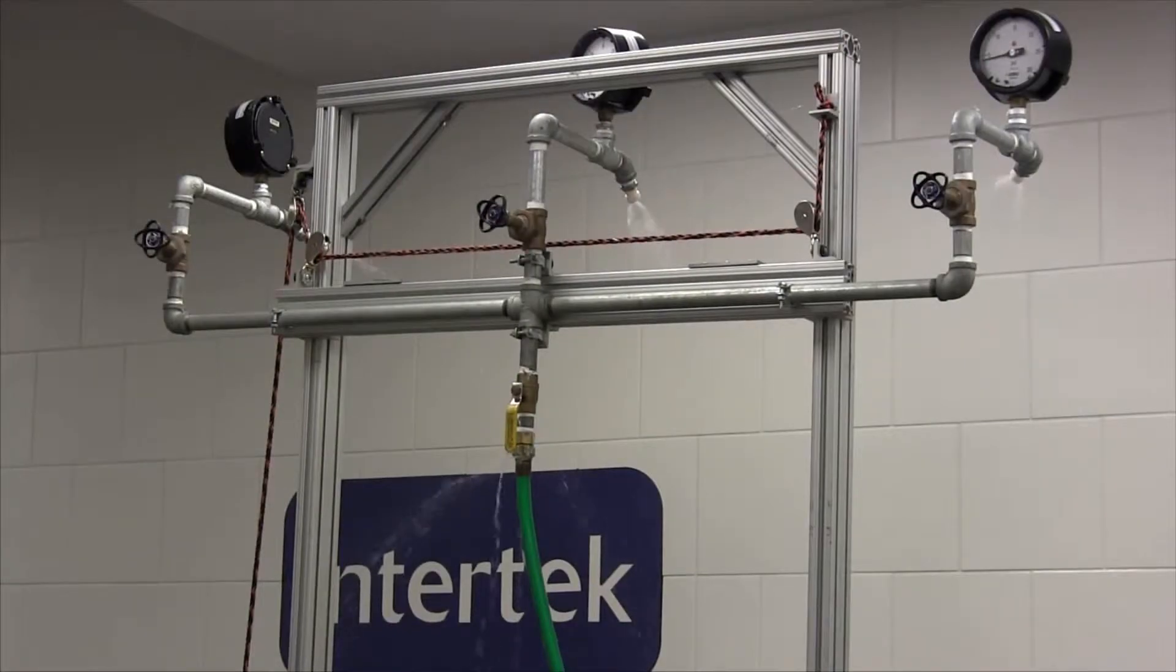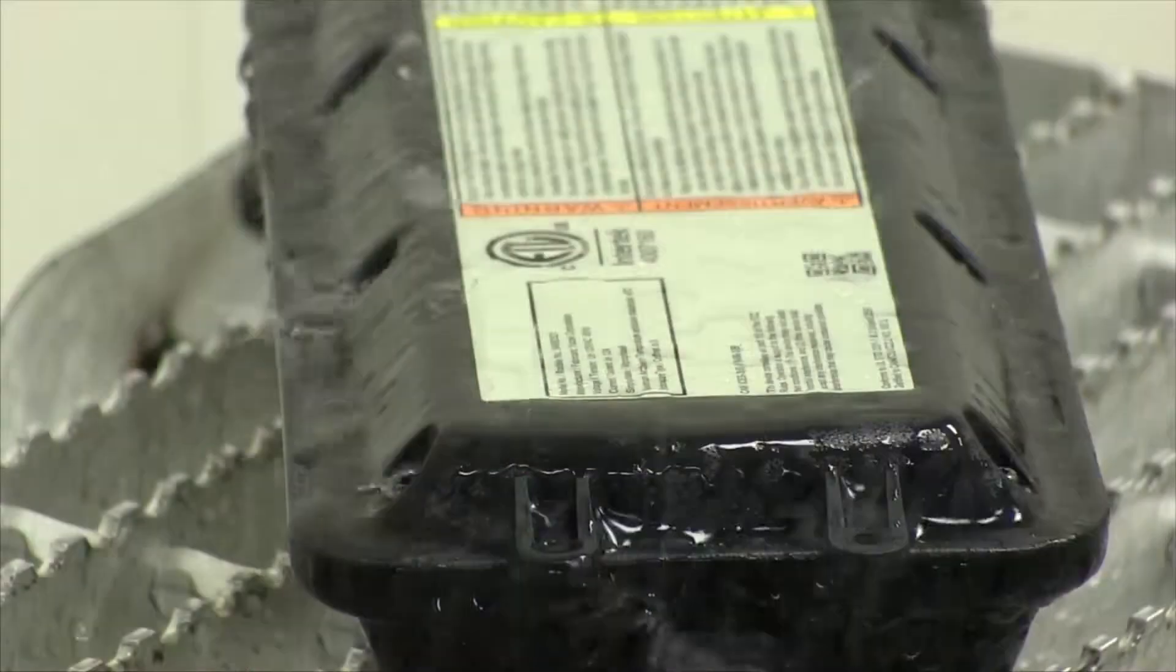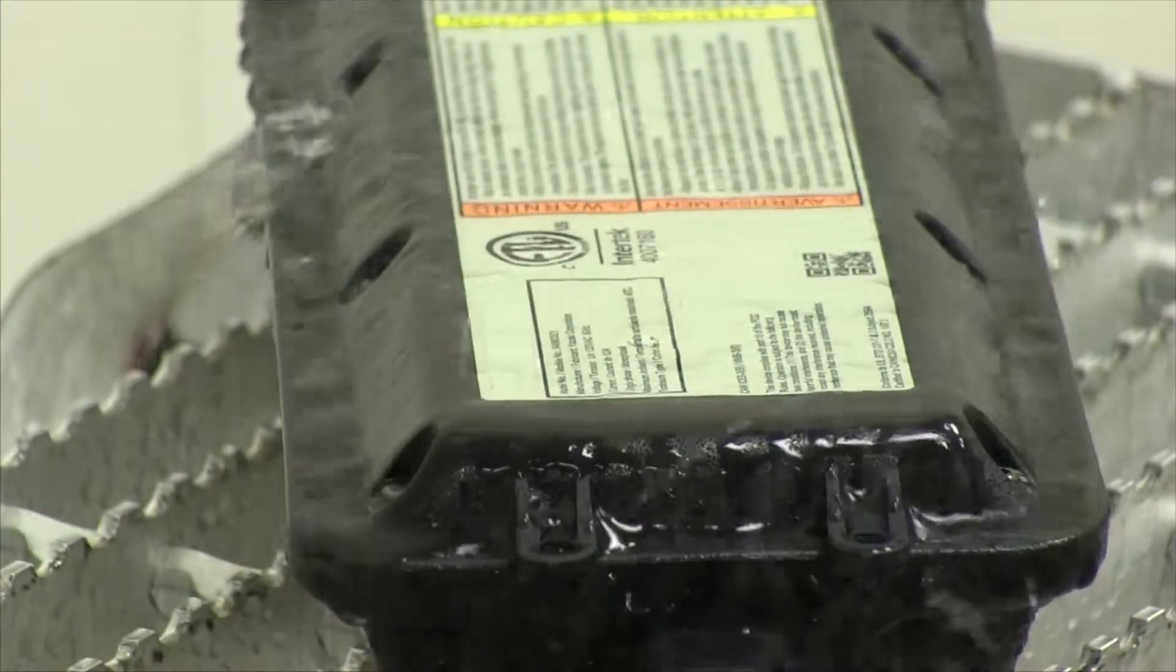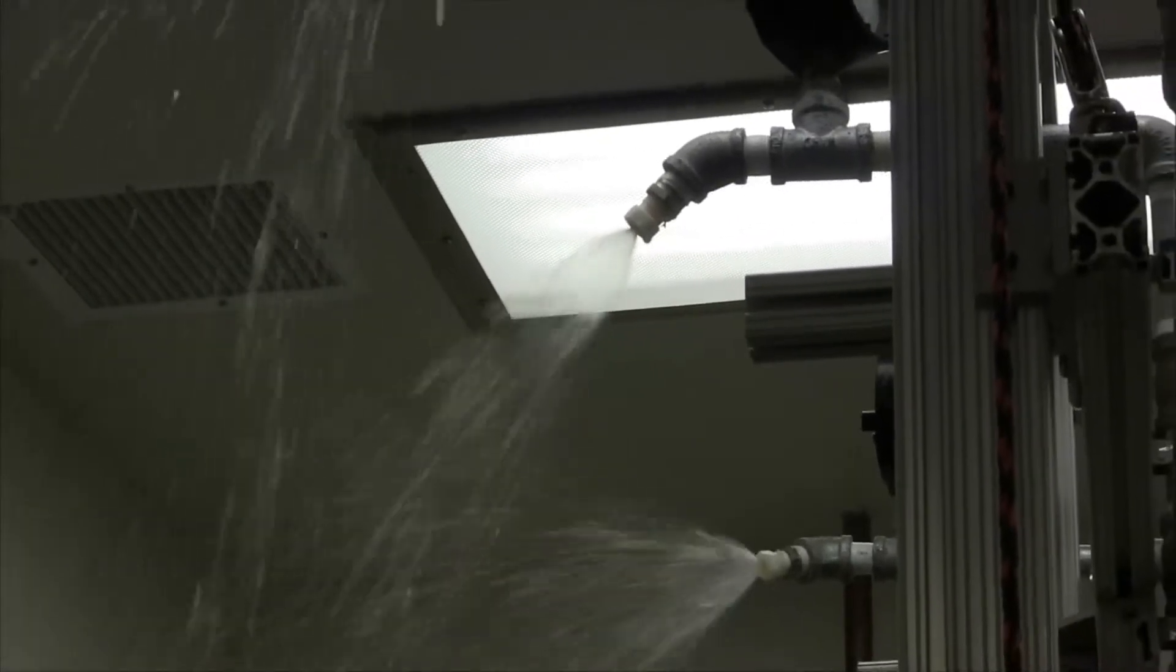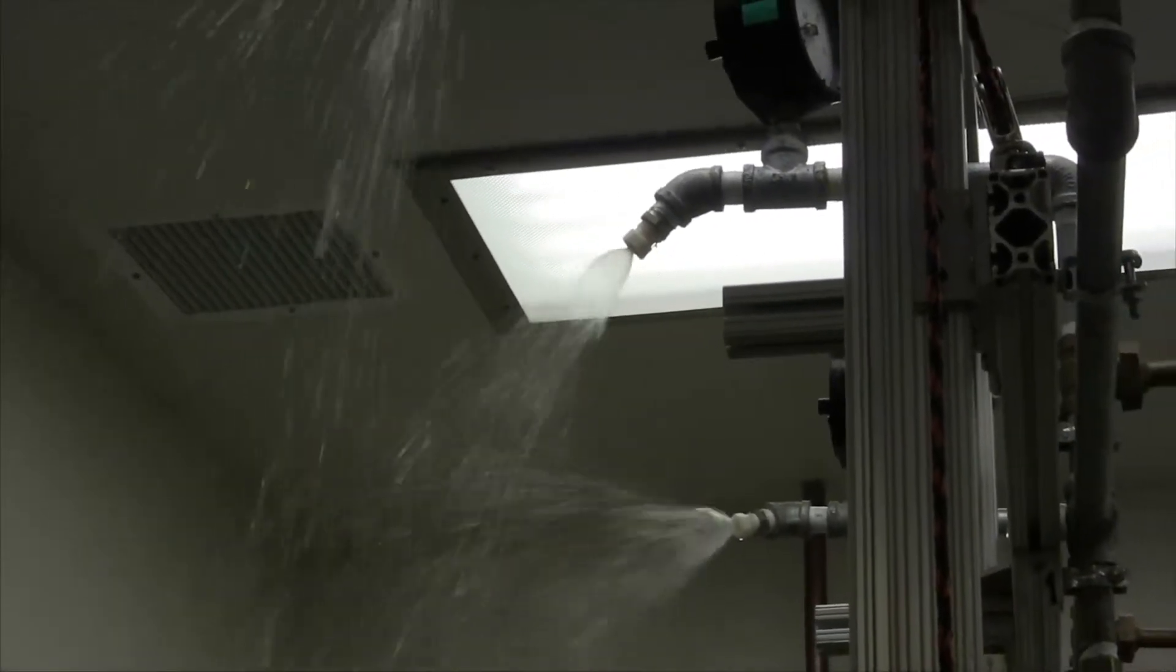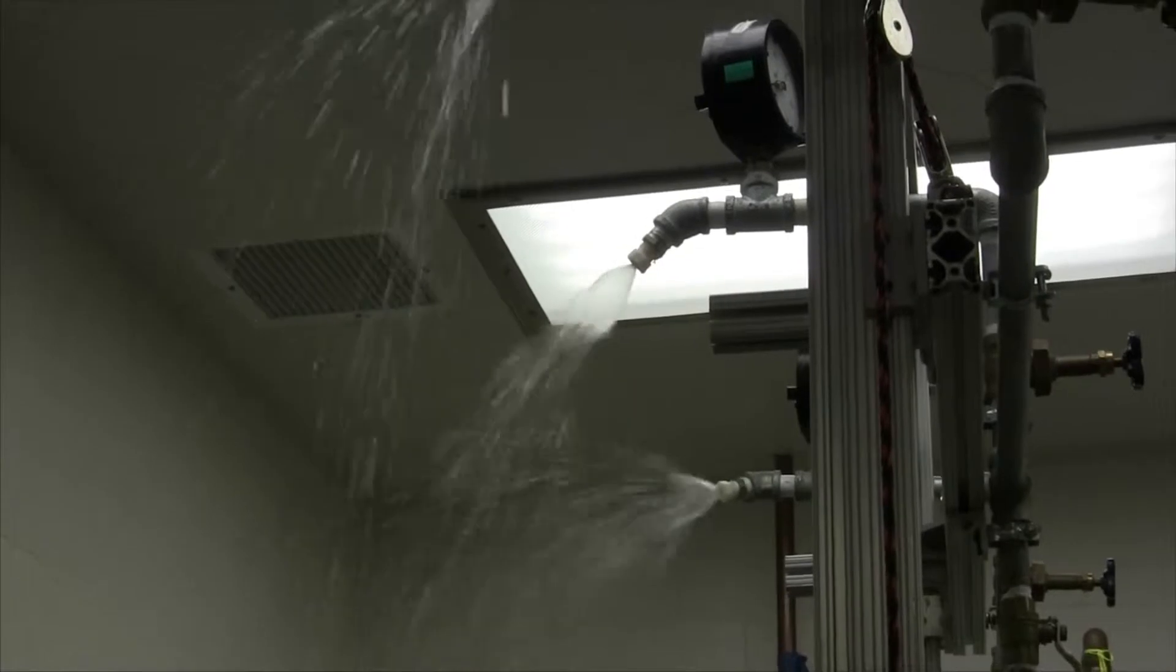Here in the rain, splash and spray test area of the product safety testing lab we're able to test products to a number of different NEMA and IP ratings tests. What this allows us to do is ensure that the product can withstand water aggression in a number of different environments. We can test everything from a small drizzle all the way up to full submersion on a product.